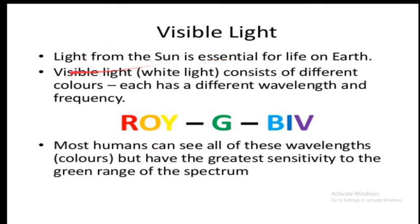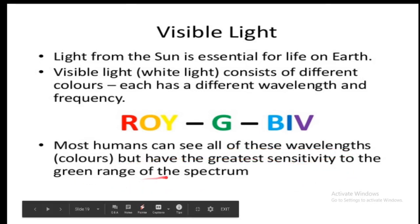What about visible light? Visible light comes from the sun and is essential for life on earth. White light consists of different colors, each with a different wavelength and frequency. Red has the highest wavelength, followed by orange, yellow, green, blue, indigo, and violet, which has the lowest wavelength, highest frequency, and highest energy.